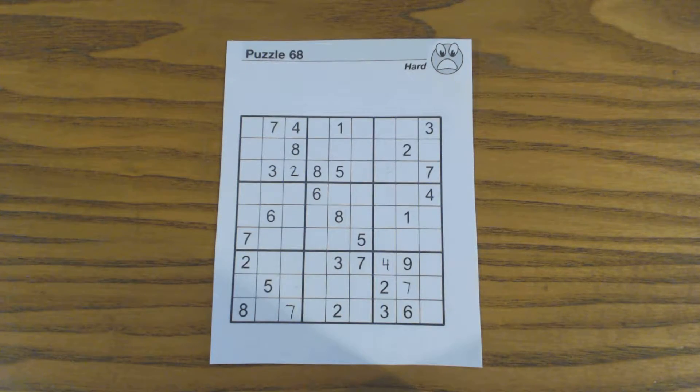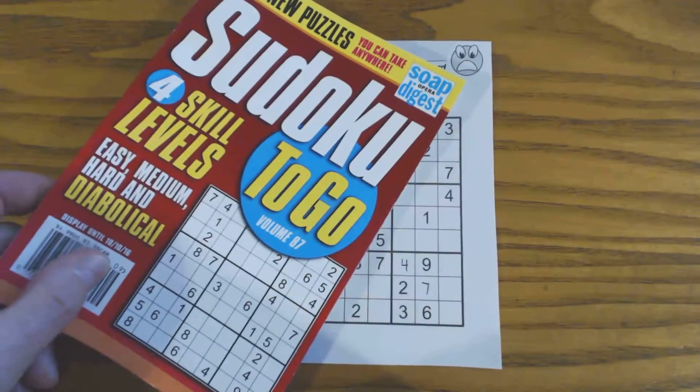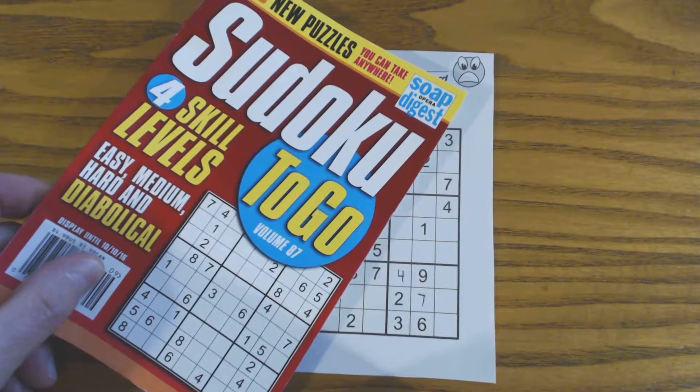This is puzzle number 68 in Sudoku to Go, Volume 87, by Soap Opera Digest.